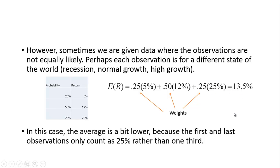Notice that when we do this we get a slightly lower average or expected return. Why? Because before, the first and the third observations were both weighted the same as the middle observation. But here the middle observation, 12%, is actually weighted more heavily than the other two.